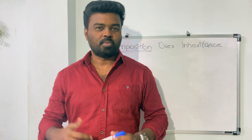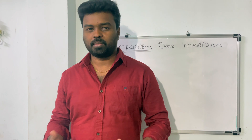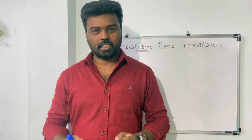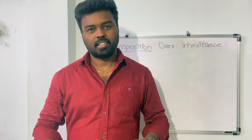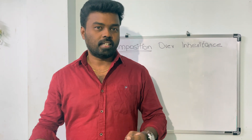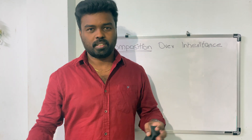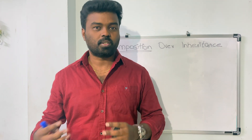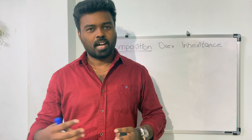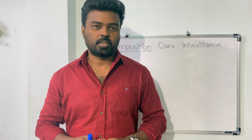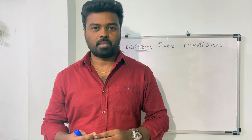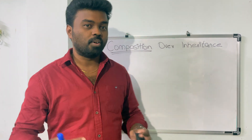Hello everyone. We are going to talk about composition over inheritance in this video. We all know that inheritance is one of the primary principles of object-oriented programming. We usually use inheritance to form a hierarchy of objects and also to reuse the code. We want to avoid duplication of the code, and we use inheritance to do that. But there is another principle in object-oriented programming to prefer composition over inheritance.